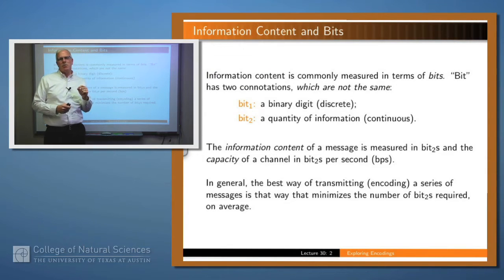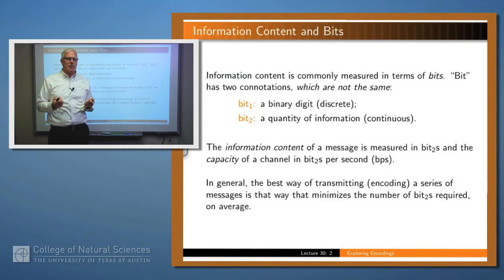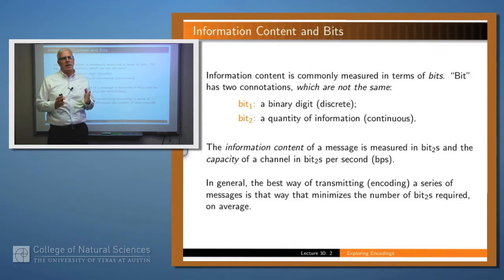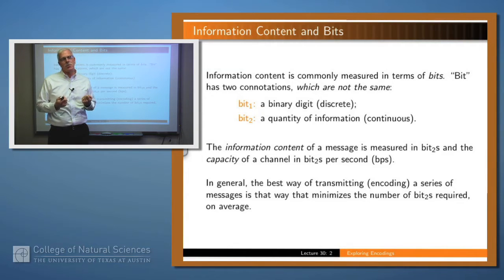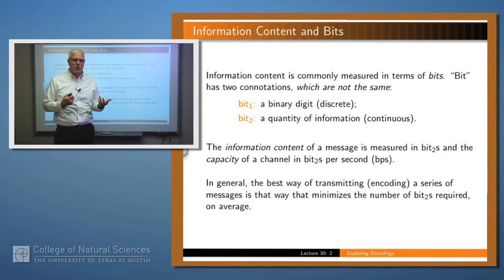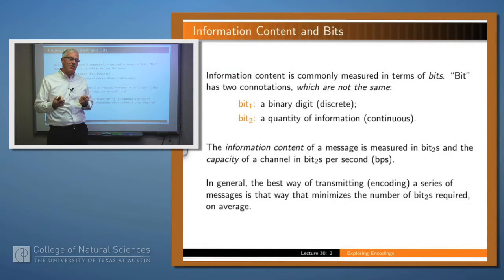First, I want to remind you that we talked about how you would measure information. Well, typically you measure it in terms of bits, but the term 'bit' actually has two different distinct meanings and you don't want to confuse the two. Bit is short for binary digit, and a binary digit is a discrete thing — it's either a zero or a one. On the other hand, when we're measuring the information content of a message, what we're measuring is a continuous quantity, and we're going to call that bits also. It's a measure of information content and it's continuous.